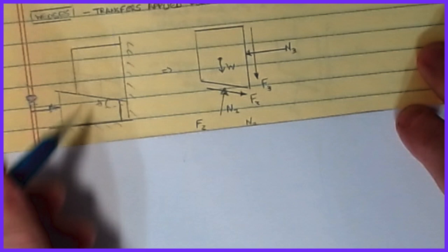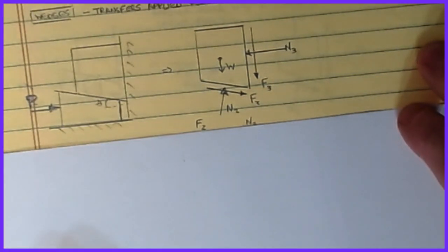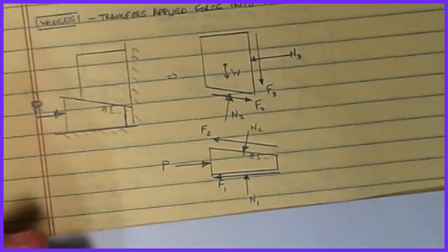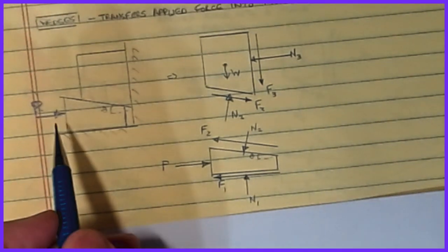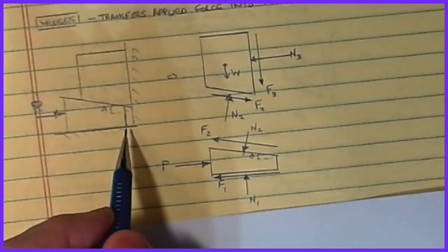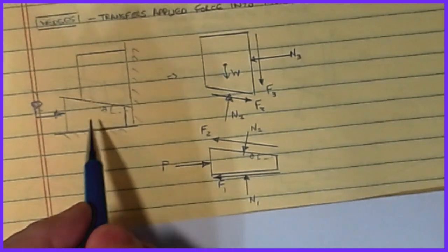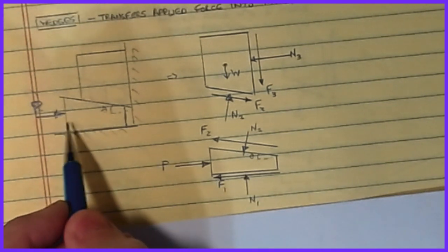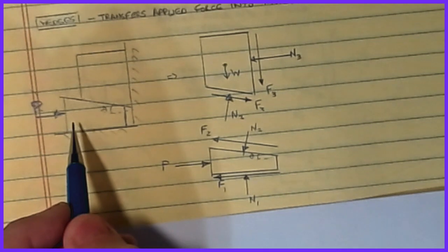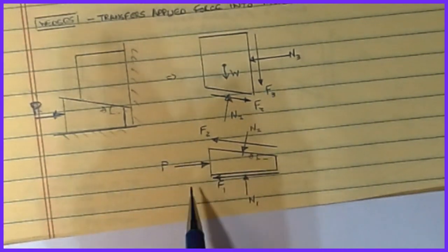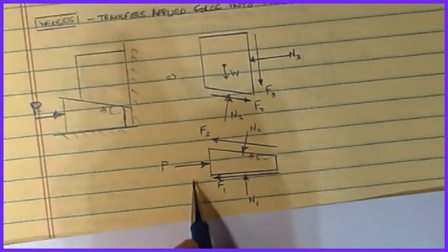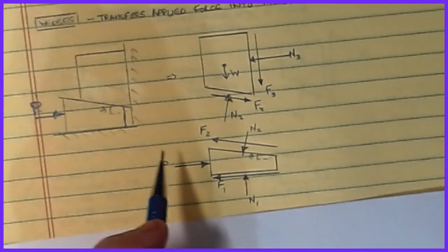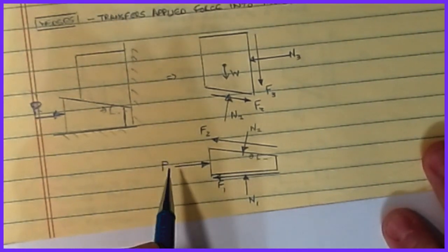Just like with other contact force problems, we're going to draw free body diagrams of the two separate parts. Normally these wedges are smaller in size or weight compared to the object they're trying to lift, and we often neglect that. We also don't consider tipping since we're assuming the dimensions are very small, so we won't see an H or worry about where the normal is located.